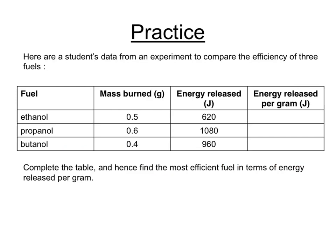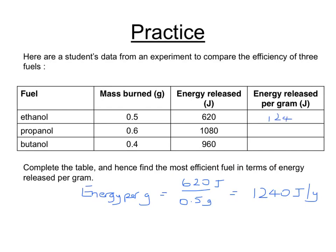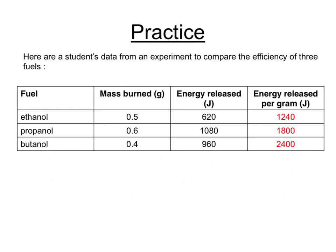For example, a student might have data where 0.5 grams of ethanol gave 620 joules, 0.6 grams of propanol gave 1,080 joules, and 0.4 grams of butanol gave 960 joules. It's not immediately obvious which gives out the most energy per gram. Working it out for ethanol: energy per gram equals 620 divided by 0.5 grams, which equals 1,240 joules per gram. Working out the others in the same way gives 1,800 and 2,400, so butanol gives out the most energy per gram.